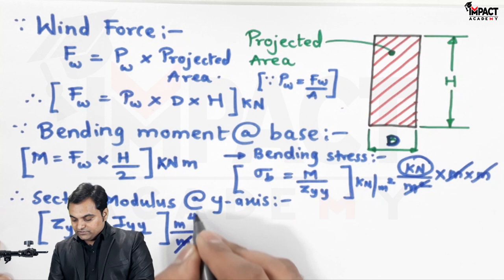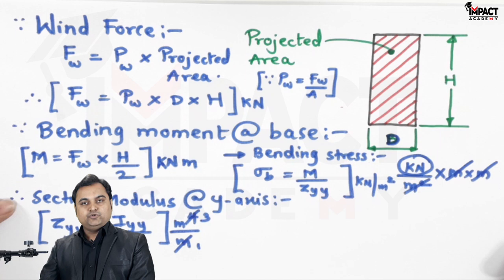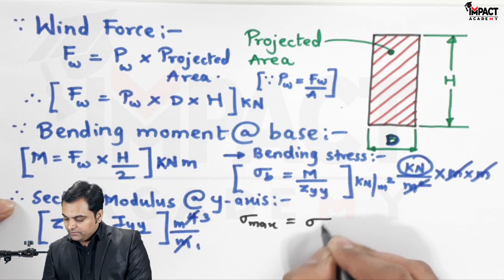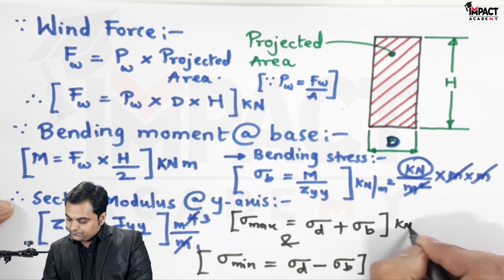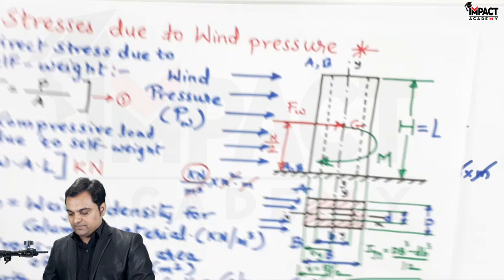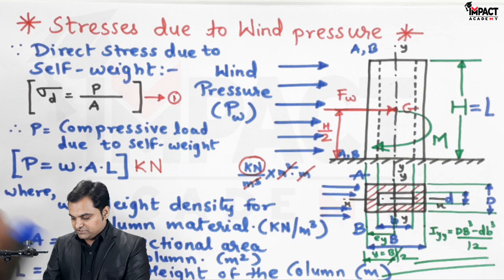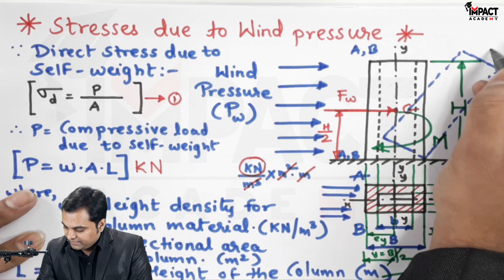Now that we know the direct stress (due to self-weight) and the bending stress (due to wind force), the maximum stress is sigma_d + sigma_b and the minimum stress is sigma_d − sigma_b. In this chapter, compressive stresses are treated as positive. If sigma_minimum is negative, it means there is tension in the section, and because of that this chimney or column may be lifted from its base due to the wind force. Such a condition is not desired in the design of a concrete chimney or column.